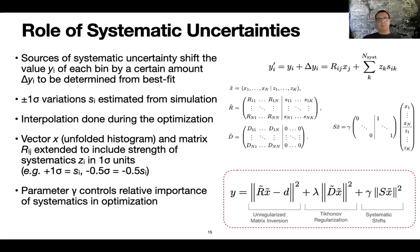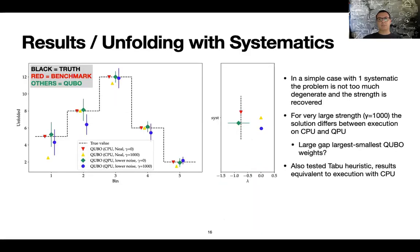So in order to do that, we promoted the response matrix to a rectangular matrix that includes the effect of the systematics. And this appears as a third additional term that is this X time S square. And it comes also with a parameter gamma that controls the relative strength of the importance of the systematic shift. So we tested a simple case where again, we have the peaking spectrum with just one systematic. And what we observe is quite interesting.